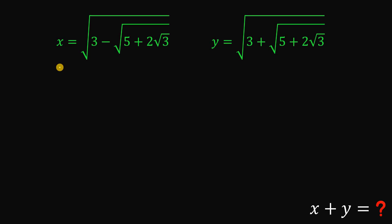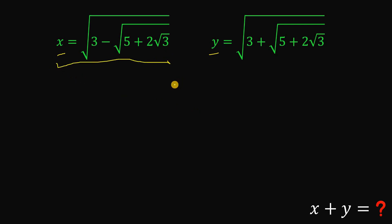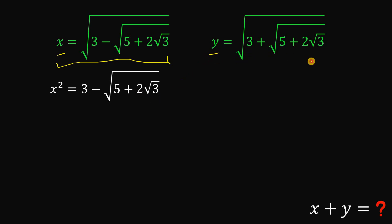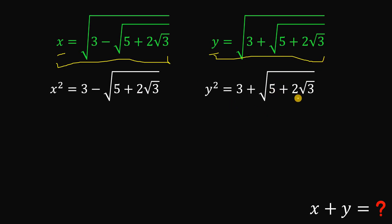Given this value of x and y, the goal is to find the simplest possible form of x plus y. To answer this kind of question, what we're going to do is square both equations. If we square x, we get x squared equals 3 minus square root of pi plus 2 times square root of 3. Similarly, squaring y gives y squared equals 3 plus square root of pi plus 2 times square root of 3.